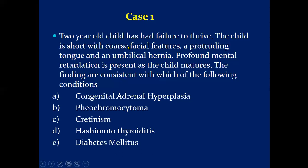This is a simple question. These features are typically of a patient with cretinism: umbilical hernia, coarse facial features, and protruding tongue. It cannot be congenital adrenal hyperplasia, pheochromocytoma, Hashimoto's thyroiditis, or diabetes. The only answer is cretinism, which is the form of hypothyroidism in a child. If the same condition is present in an adult, it is called myxedema or adult hypothyroidism.